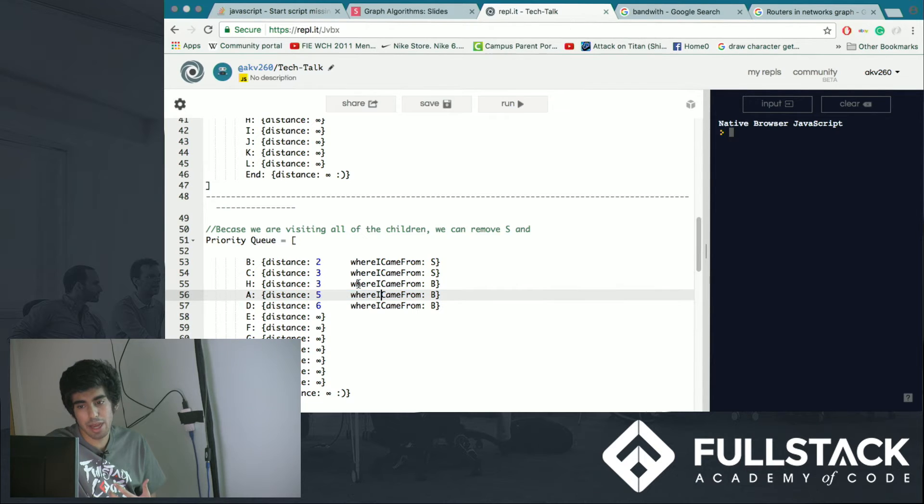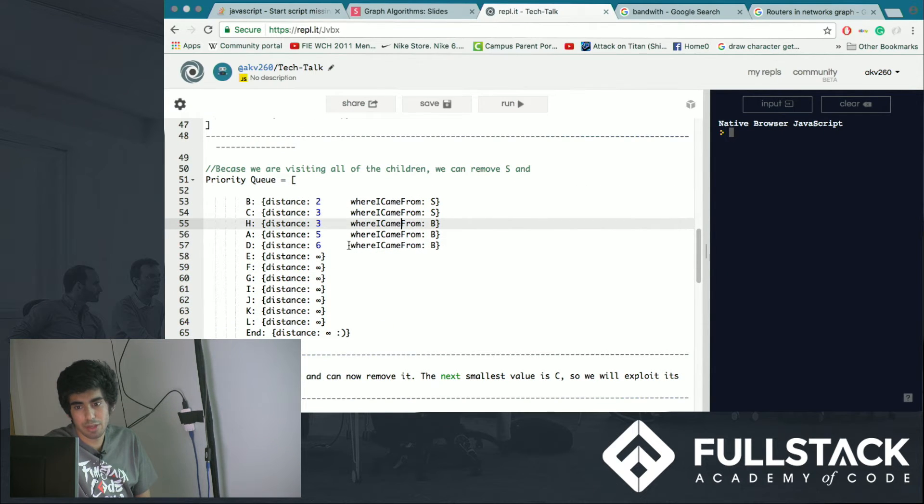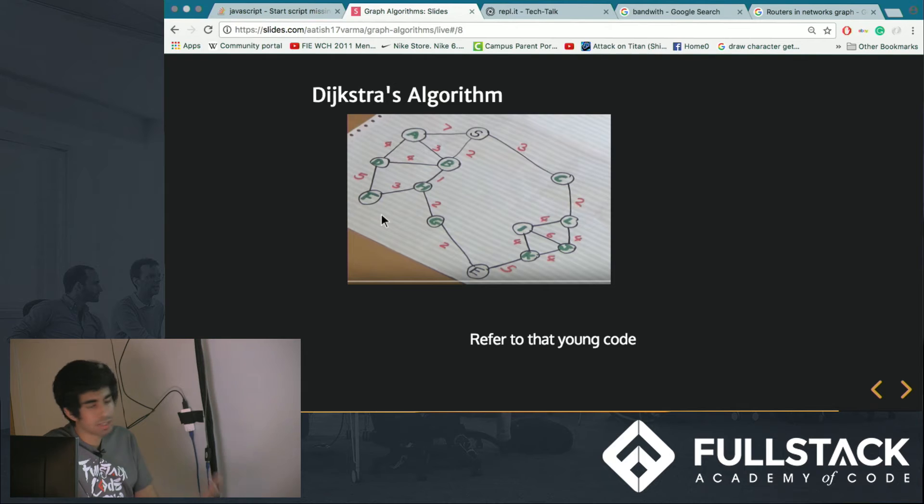So this is what we do here. And I say where I came from is B. I keep on doing that so now the smallest value is C.